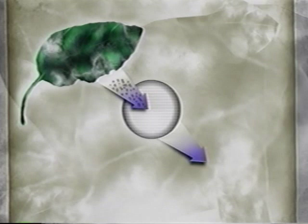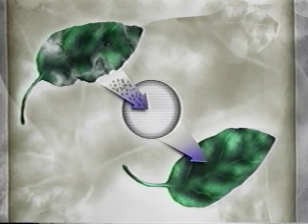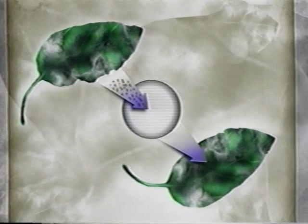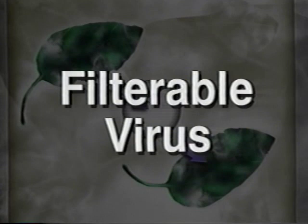The mystery deepened when they took the sap from diseased leaves and passed it through a filter fine enough to retain any bacteria. Then they applied the sap to healthy leaves. If the disease were caused by bacteria, the filter would prevent any bacteria from infecting the healthy leaves. But they too became diseased. The most likely explanation was that there was a disease-causing agent in the sap that was much smaller than any known bacteria. Scientists eventually used the term "filterable virus" to describe whatever such a mysterious agent was. The word virus comes from the Latin word for poison. Filterable means that the virus was so small that it could pass through a filter that could hold back bacteria.